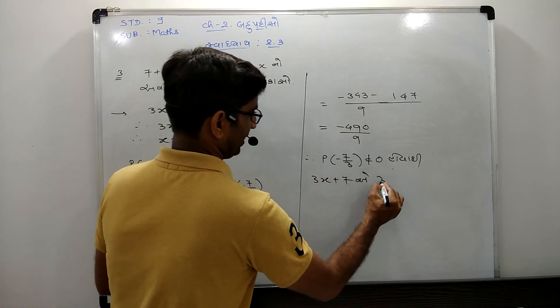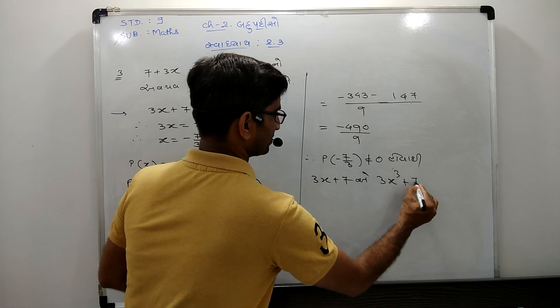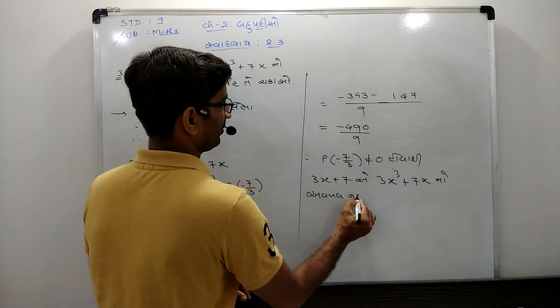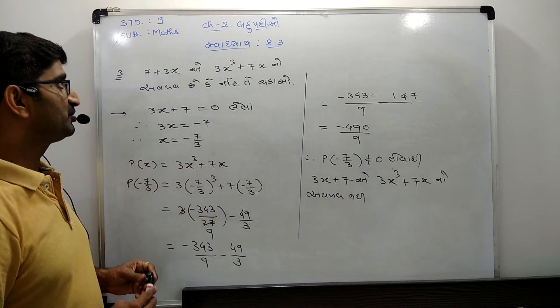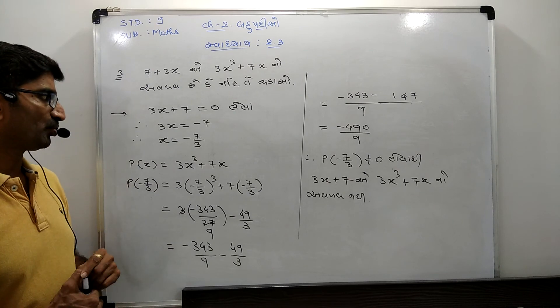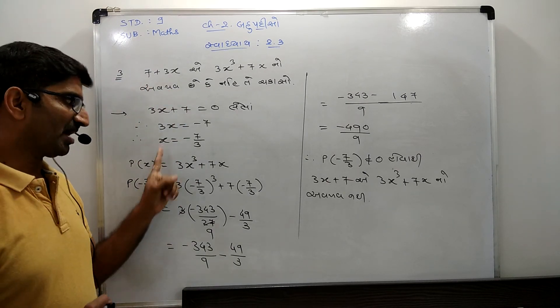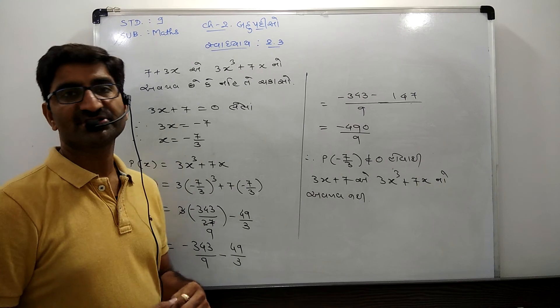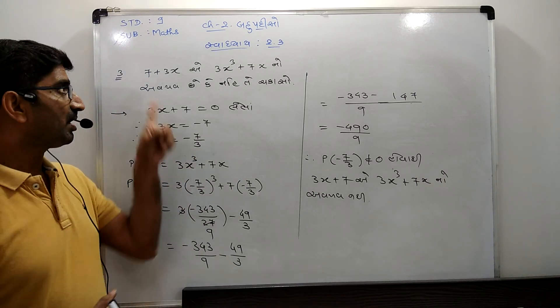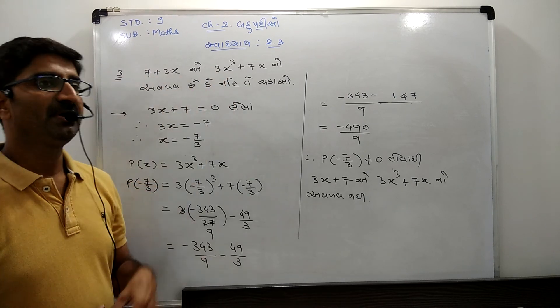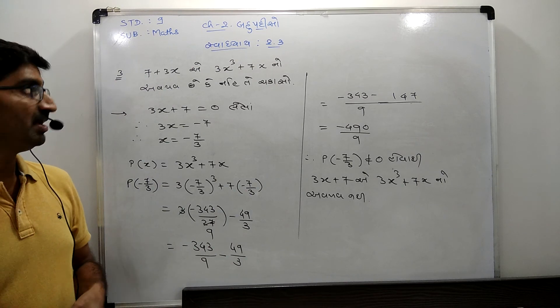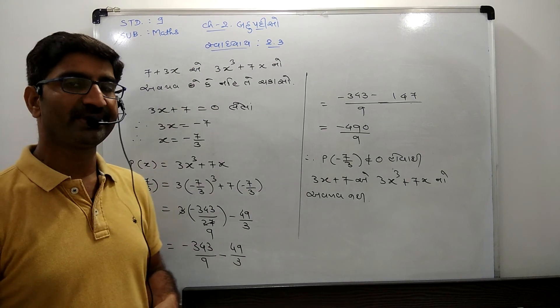We have 3x plus 7x. So here we can talk about p of minus 7 upon 3. We can have p of minus 7 upon 3, and we can have a chance here with p of minus 7. We can have p of minus 7x, 3x plus 7x.